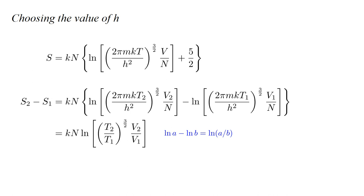If we use our formula to calculate the entropy change in going from state one with temperature T one and volume V one, to state two with temperature T two and volume V two, all of the constants in the argument of the logarithm cancel. This leaves us with the result we derived in video four using thermodynamic arguments: S two minus S one equals k n times the natural log of T two over T one to the three-halves power times V two over V one.